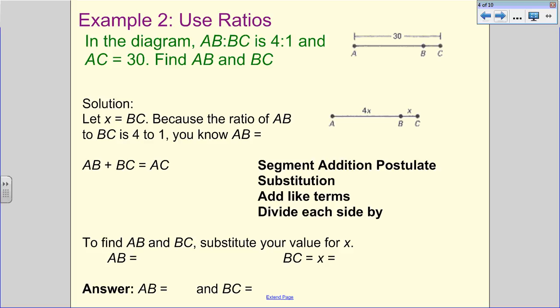All right, now what we're going to do is use the ratios that we have. So in the diagram, AB to BC is a 4 to 1 ratio. And we know that AC, the entire length of that segment, is 30. We want to find the two smaller segments, AB and BC. We're going to let X equal BC. We're always going to label our smaller segment with X. And so because this is 4 to 1, 4 goes to the AB and 1 goes to BC. So that's why X is equal to BC.